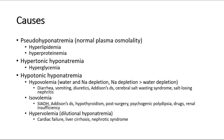Isovolemia can be due to SIADH, hypothyroidism, psychogenic polydipsia, and others. Whereas hypervolemia is usually due to dilutional hyponatremia. It can happen due to fluid overload and cardiac failure, liver cirrhosis, and nephrotic syndrome.